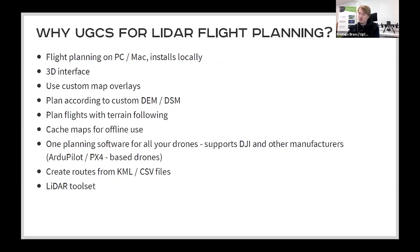Some of the really useful things in UGCS: you can use custom map overlays. If you're in an area without a good map, you can fly a photogrammetry mission, take images, and then do more detailed flights based on your own custom map. You can plan according to custom digital elevation models or digital surface models, meaning you can plan terrain-following flights. By default we use SRTM4 elevation data, but you can use your own custom source. You can also cache maps for offline use. UGCS Expert currently supports DJI as well as other manufacturers, and you can create routes from KML and CSV files.